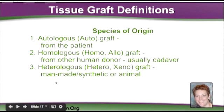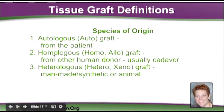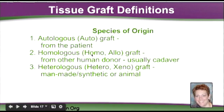So the first thing we need to understand are the types of grafts out there. There are autografts — 'auto' meaning self — so it's basically a graft coming from the patient. Then there's homologous grafts, also known as homo or allografts. 'Homo' meaning same, so it's coming from the same species — another human donor.